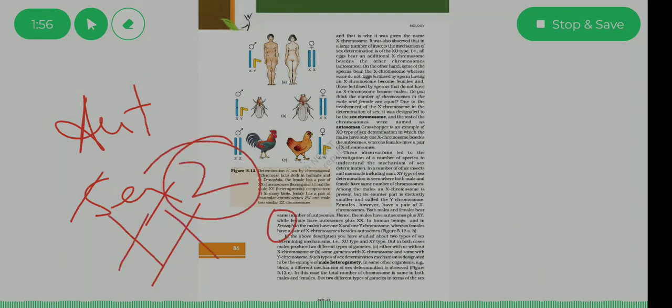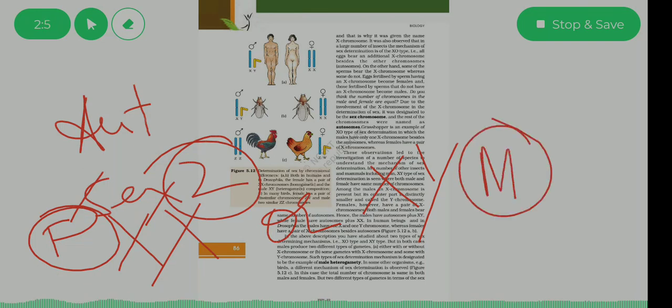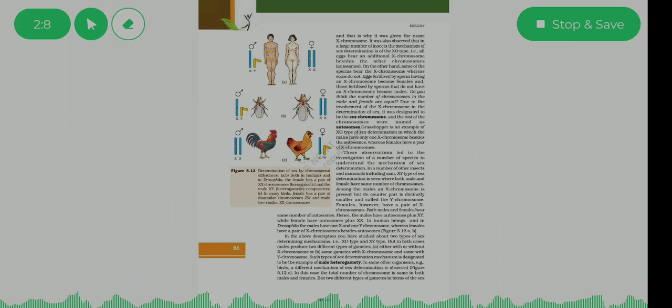Ya to woh XX ho saktata hai, ya to woh XY ho saktata hai. Agar humare paas XX hai, to woh individual female hai. Agar humare paas XY hai, to woh individual male hai. Ye points up yaad rakhye.